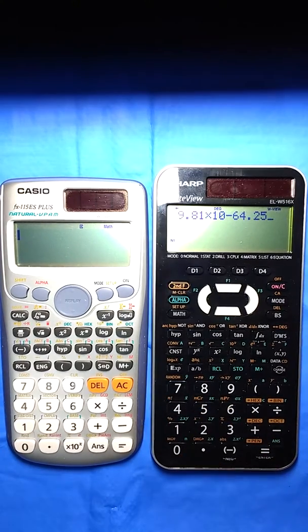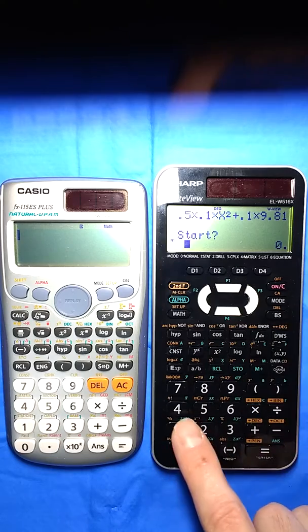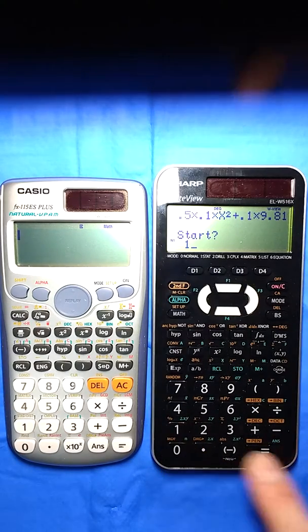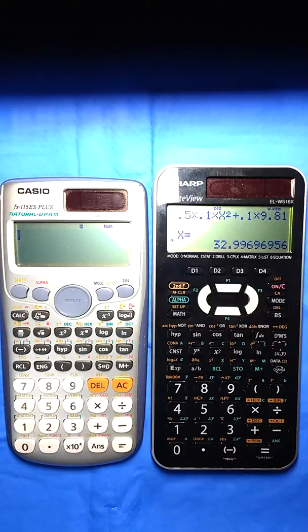And then I have to do minus 64.25, my total energy. And because everything has to be on one side of the equation, at that point I can do math solver, give it a starting value—it does not like zero, so I'm going to do one—and I skip the little next step. All right, 33 meters per second squared.